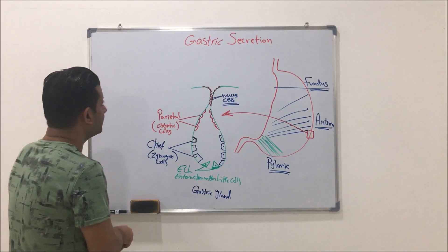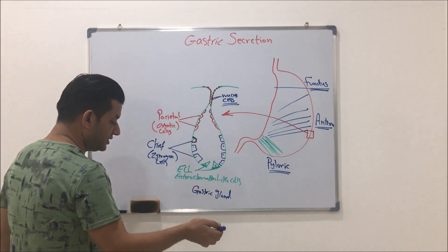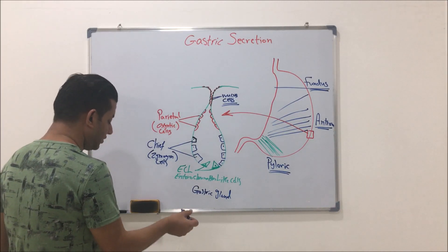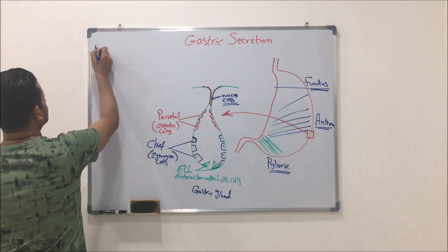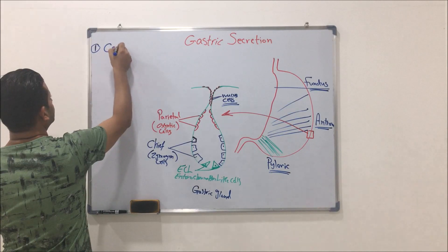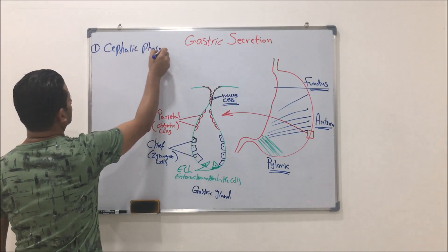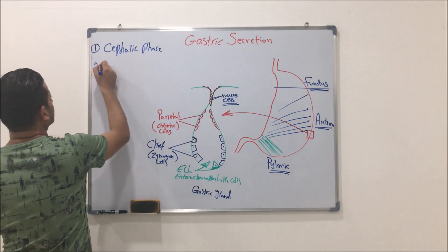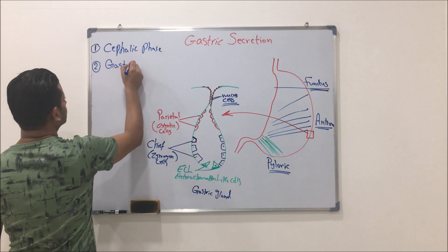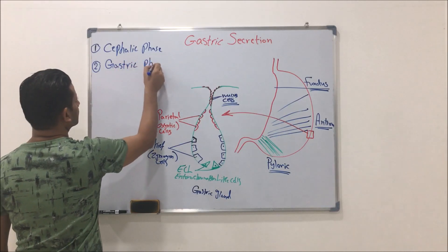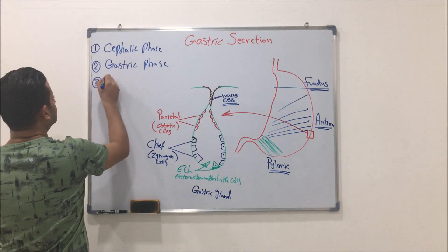We have three important phases when speaking about the control of gastric secretion. The first phase is called the cephalic phase, the second one is called the gastric phase, while the third one is called the intestinal phase.